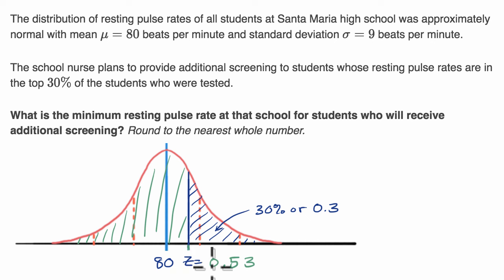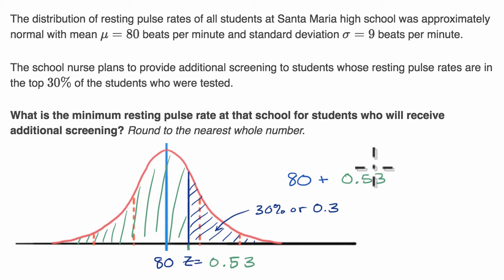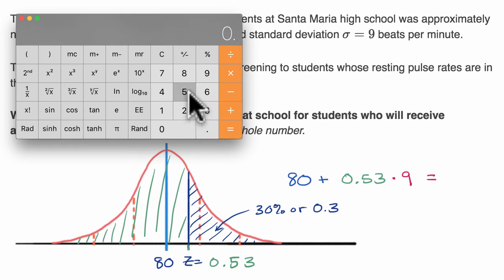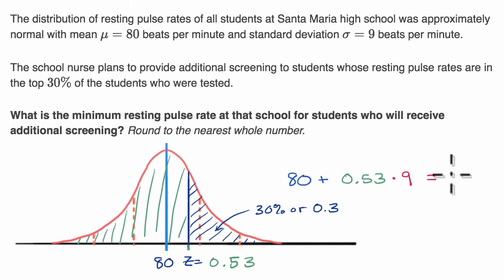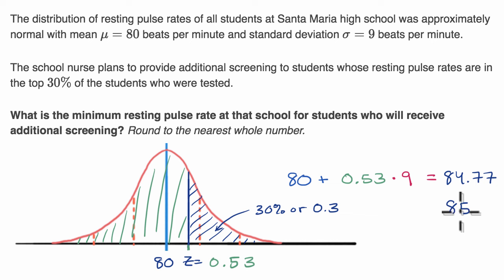A z-score of 0.53 means 0.53 standard deviations above the mean. To get the actual value, we take our mean and add 0.53 standard deviations: 0.53 times nine equals 4.77, plus 80 equals 84.77. Rounded to the nearest whole number, that gives us 85 beats per minute.